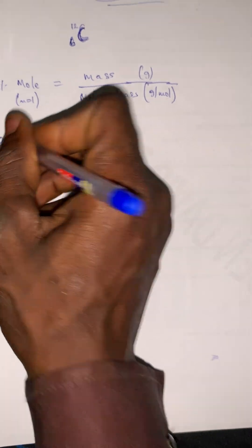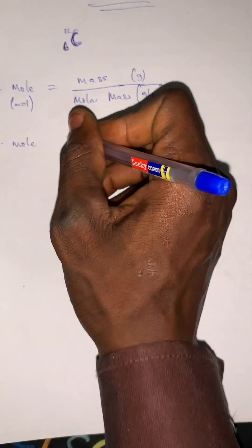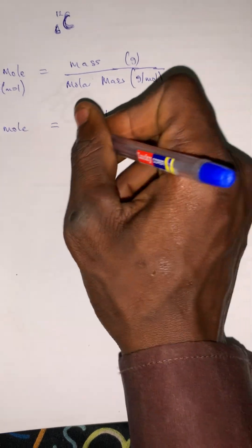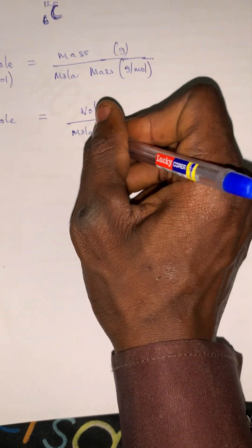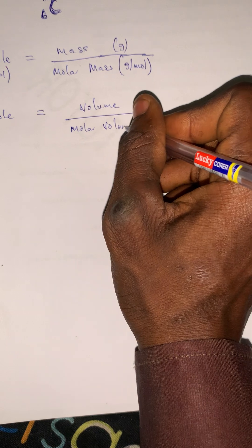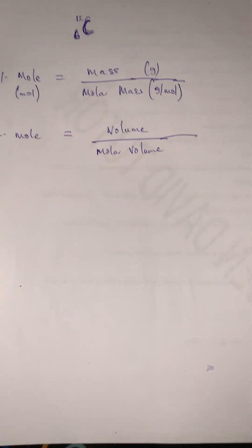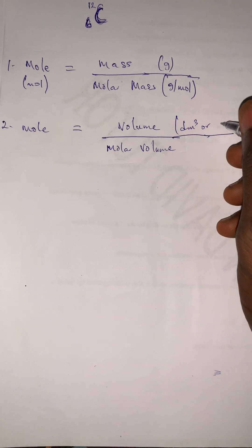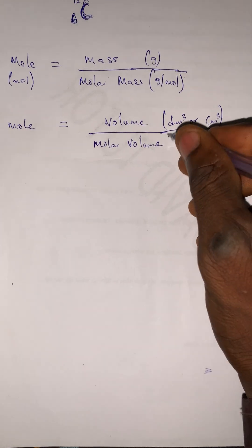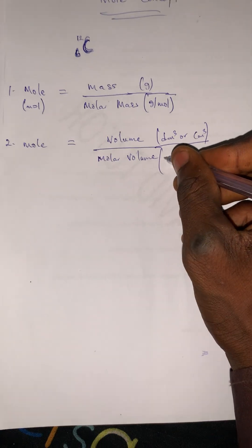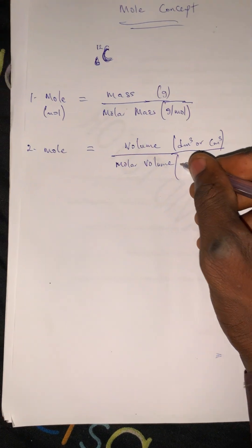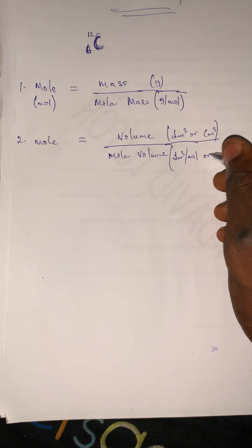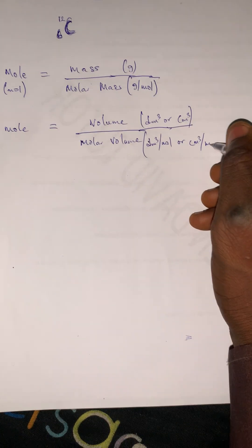Number two: mole can equal volume over molar volume. Volume is dm³ or cm³, and we have the molar volume to be dm³ per mole or cm³ per mole.